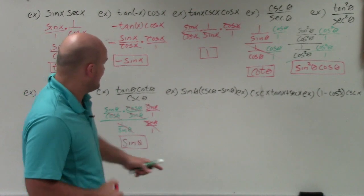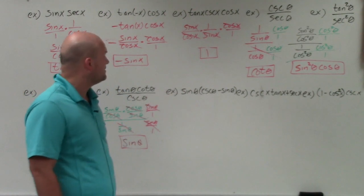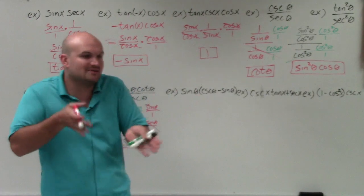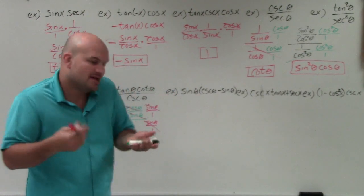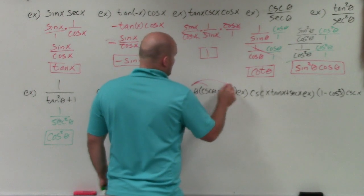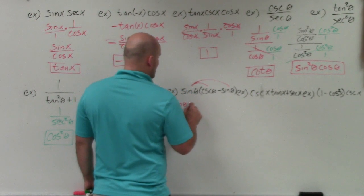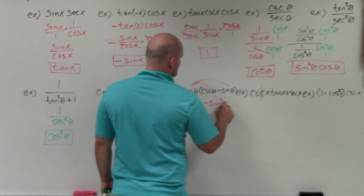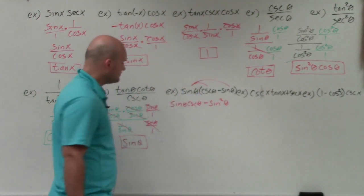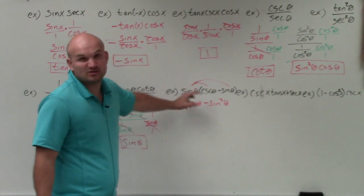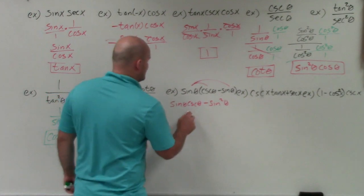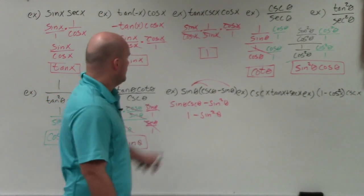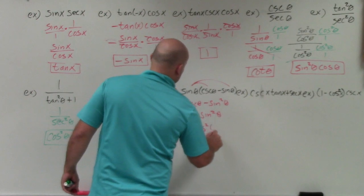In the next example, I have sine of theta times the quantity cosecant of theta minus sine of theta. Applying the distributive property gives sine of theta times cosecant of theta, minus sine squared of theta. Sine and cosecant are reciprocals, so they multiply to 1, leaving 1 minus sine squared of theta. Knowing our Pythagorean identities, 1 minus sine squared of theta is simply equal to cosine squared of theta.